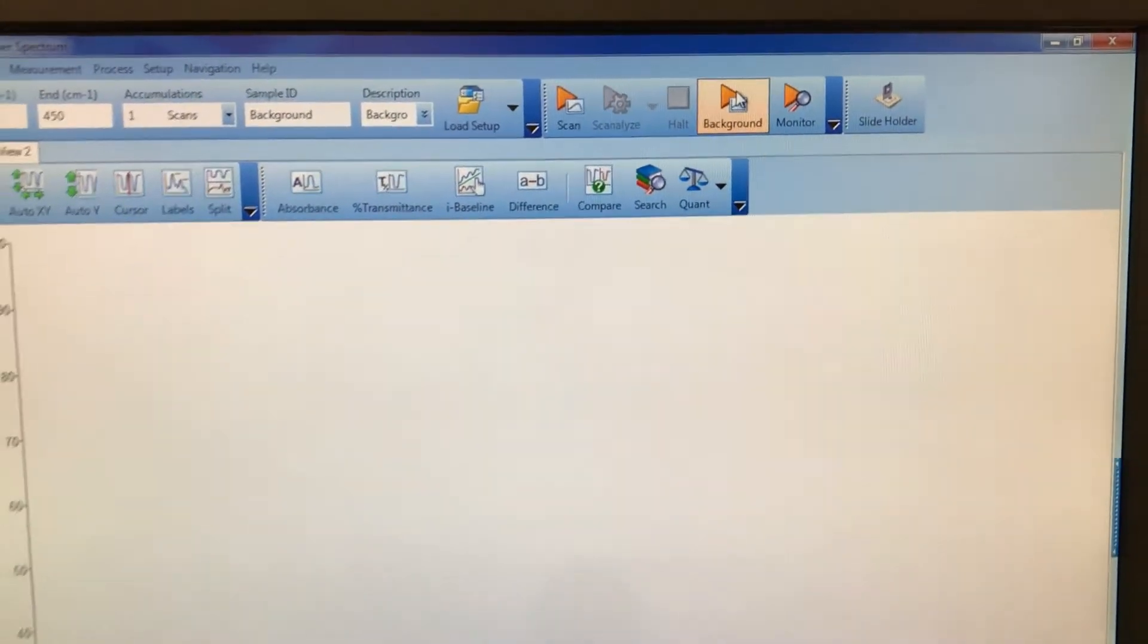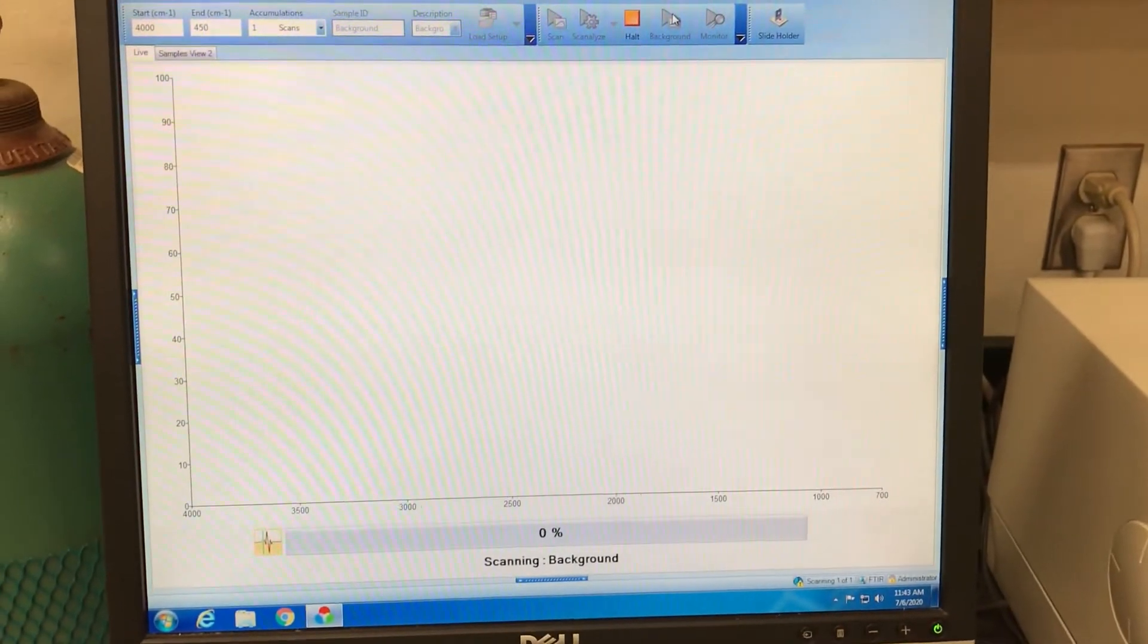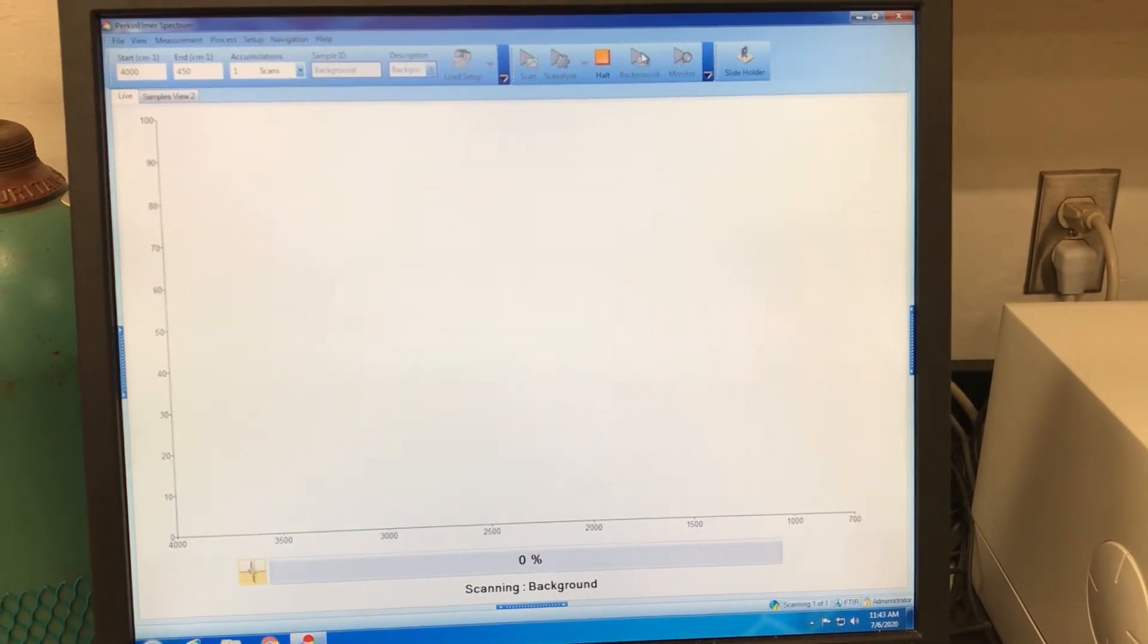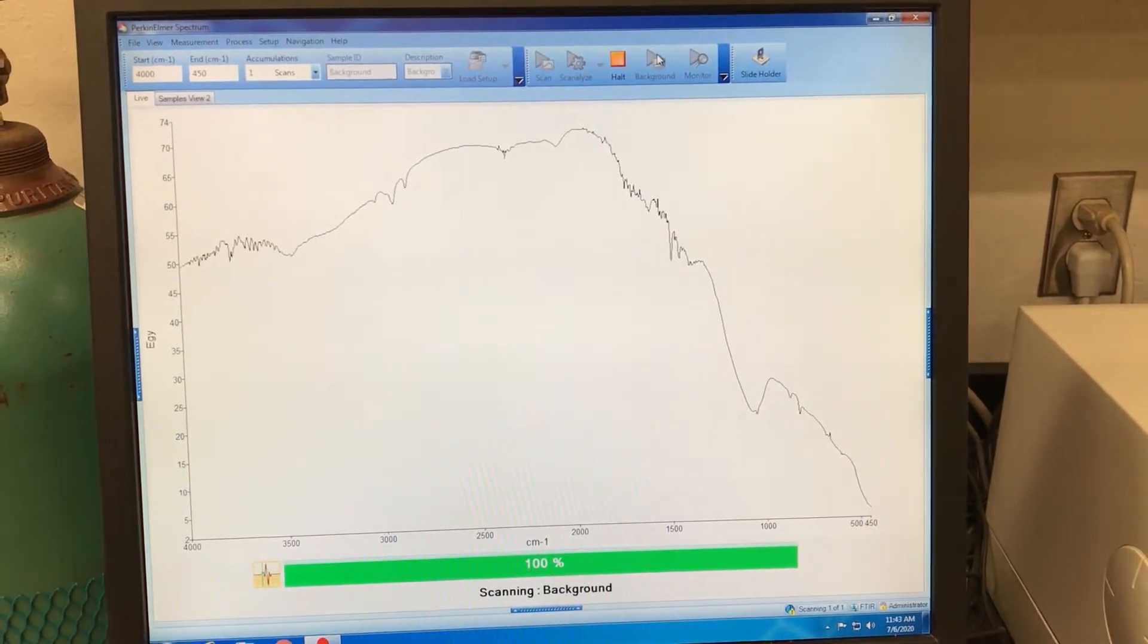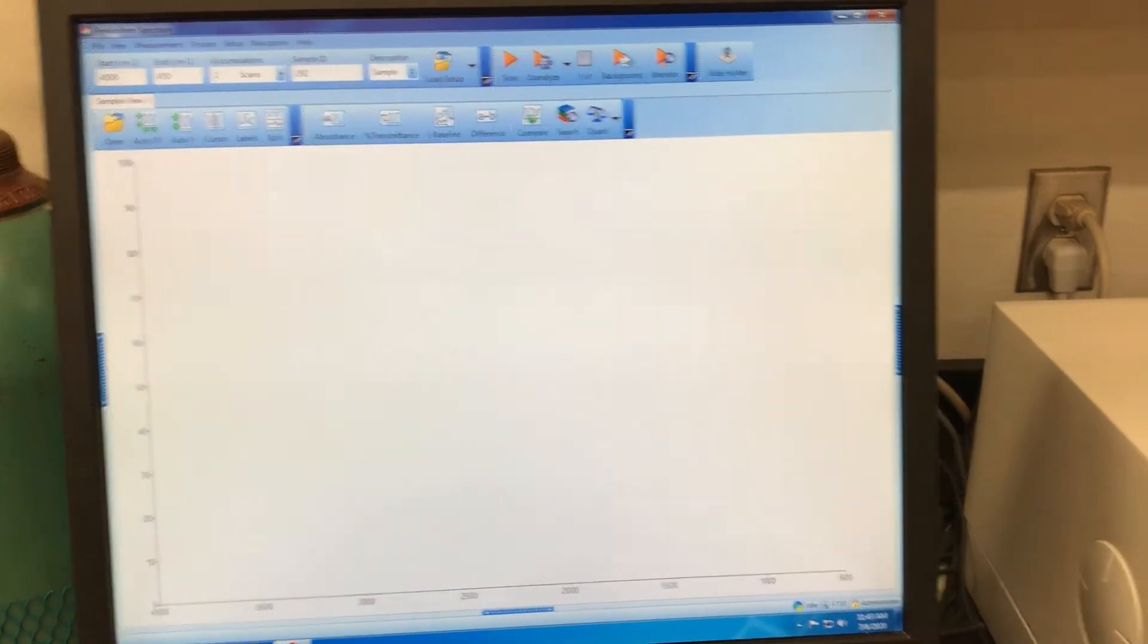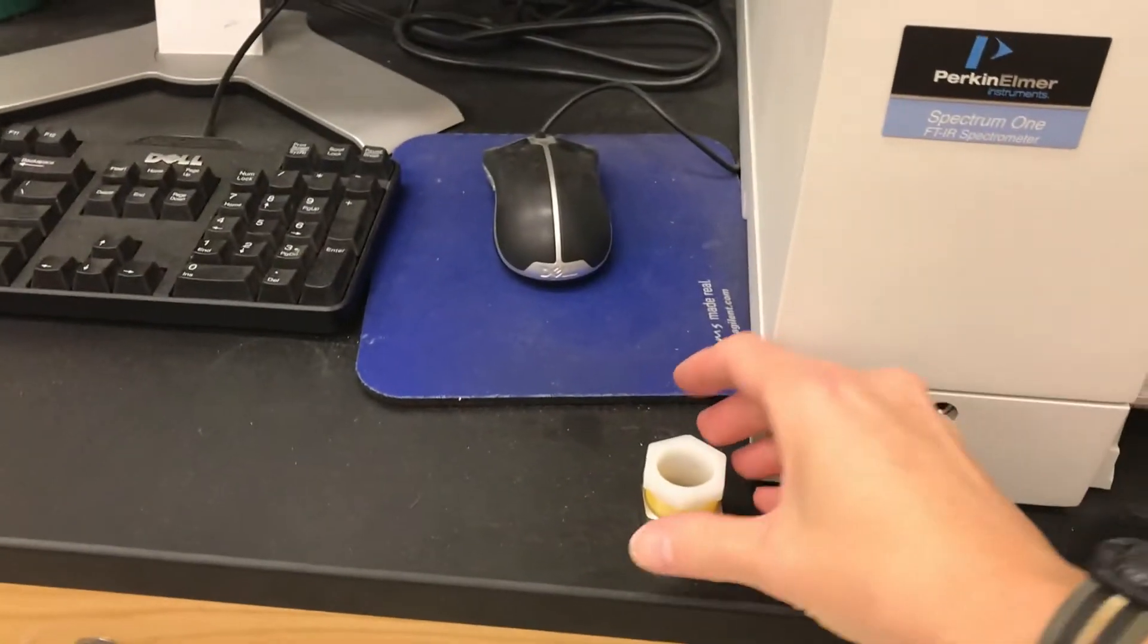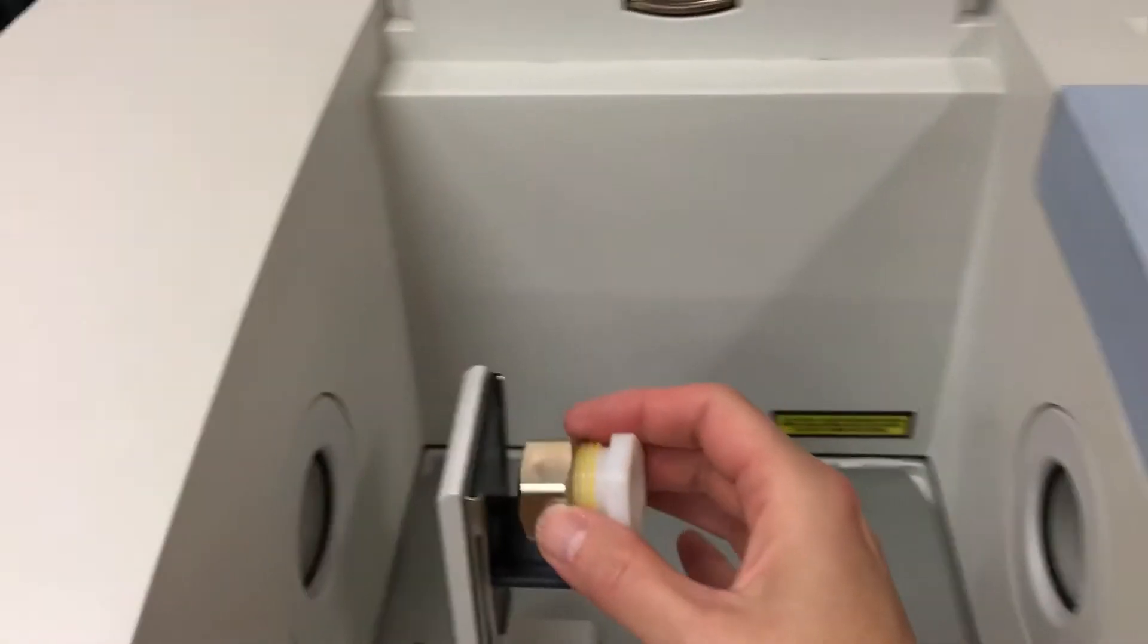What that'll do is it'll take an IR of the air that's inside of that instrument and it's very quick because what you next do is then you open it up and then you put your sample in there and you place it on that black holder.